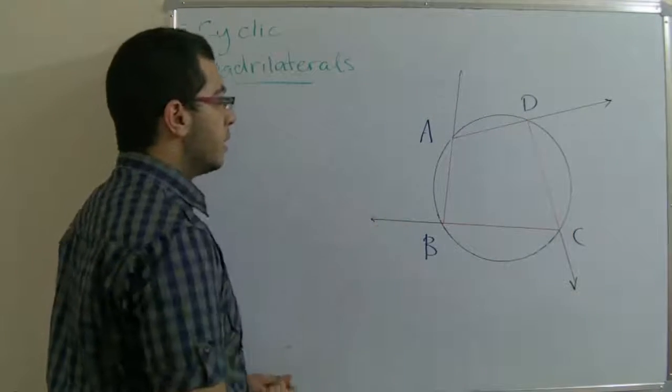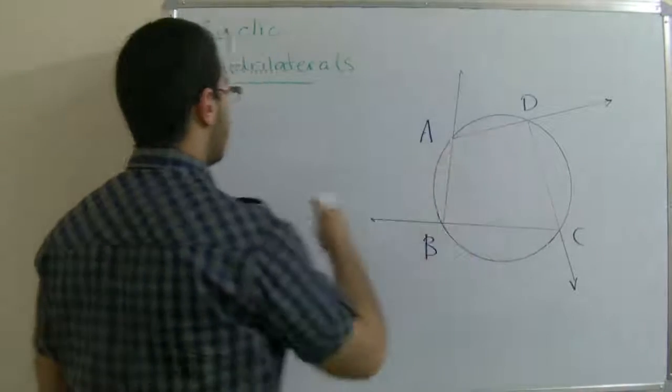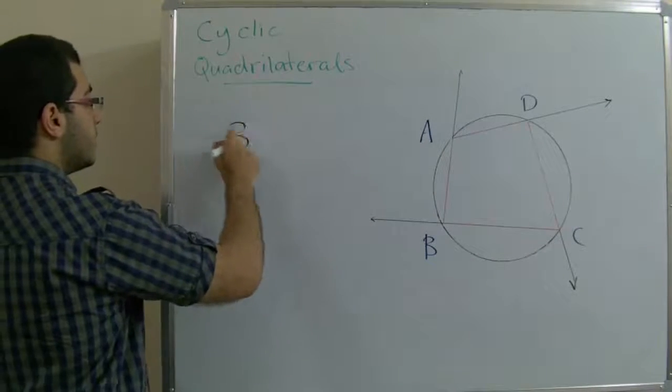From this, the sum of all the angles of the quadrilateral equals 360 degrees.